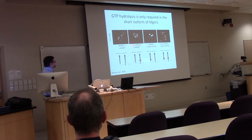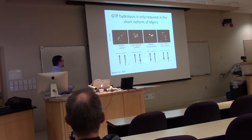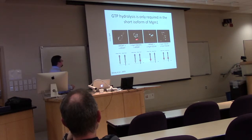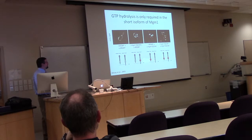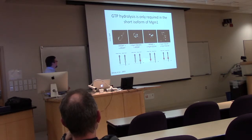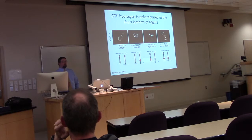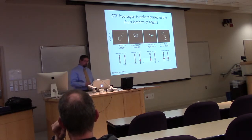If you mutate just the long isoform's GTPase domain so it no longer hydrolyzes GTP, it has little effect on morphology and you still get a connected network. However, doing the same to just the short isoform gives a fragmented network. When both are mutated you still get fragmentation. So only GTPase activity by the short isoform is required for fusion, making the long isoform's function rather enigmatic.